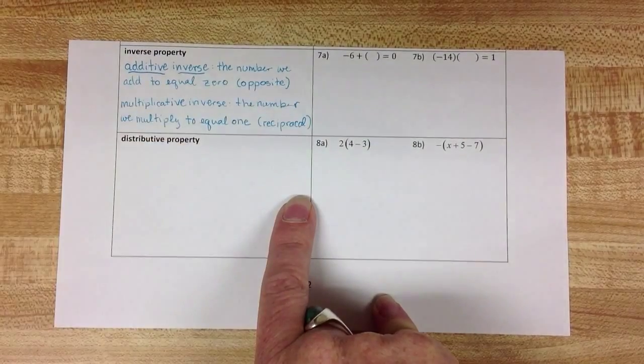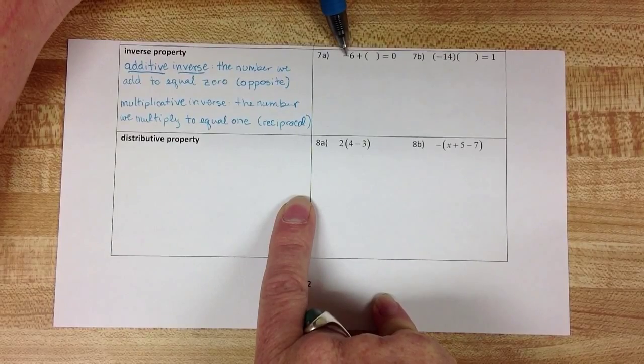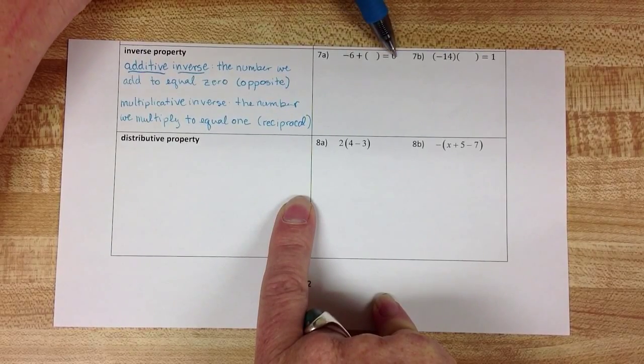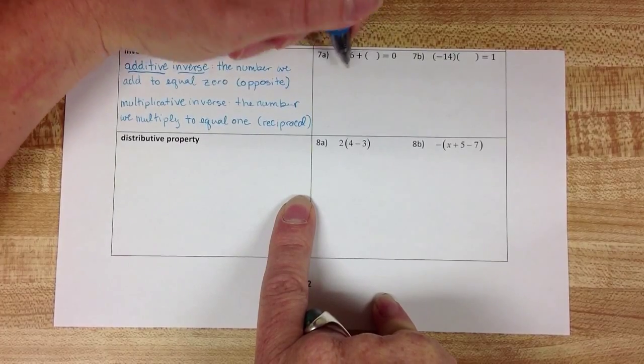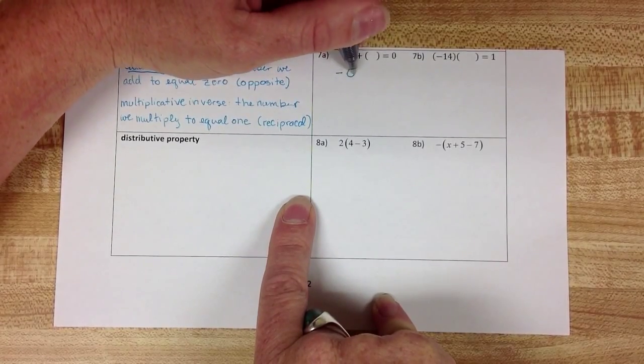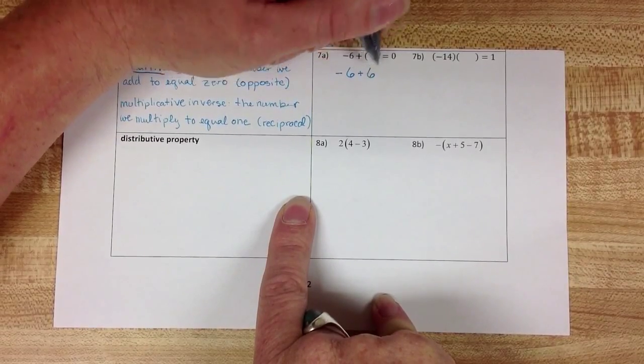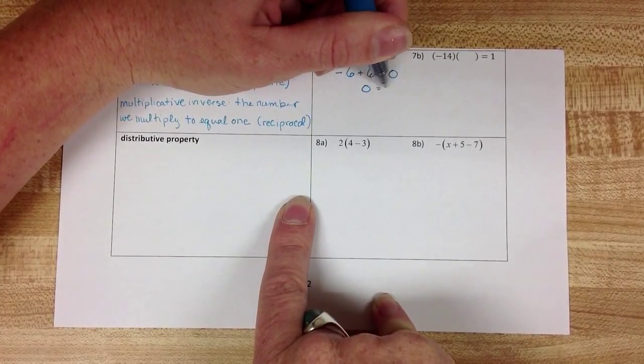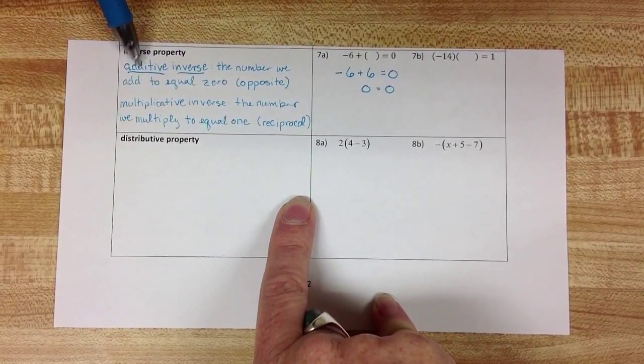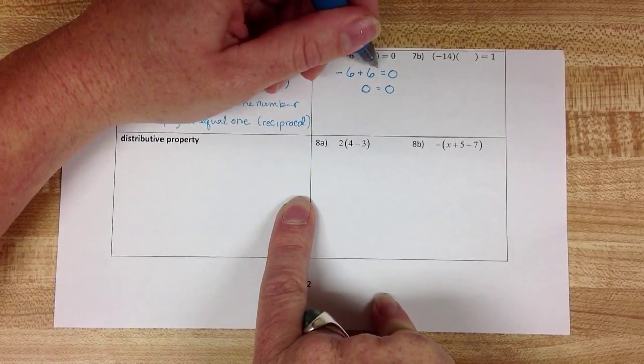So let's look at some examples to make sense of that. If I want to figure out what do I add to negative 6 in order to get 0 as my answer, it's going to be the number that is the opposite of negative 6. Negative 6 plus a positive 6 would give me 0. So the additive inverse of negative 6 is a positive 6.